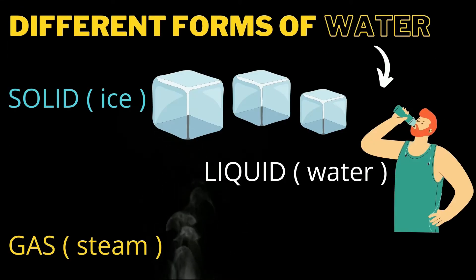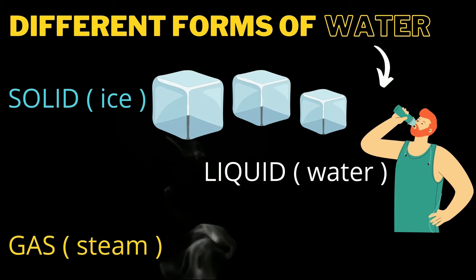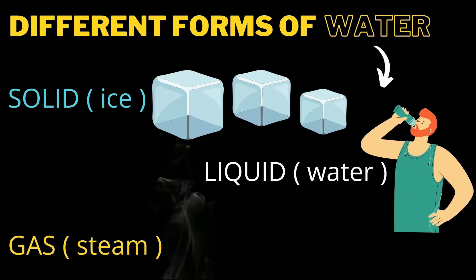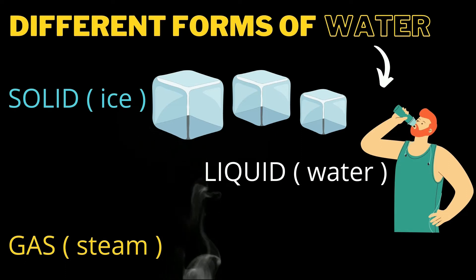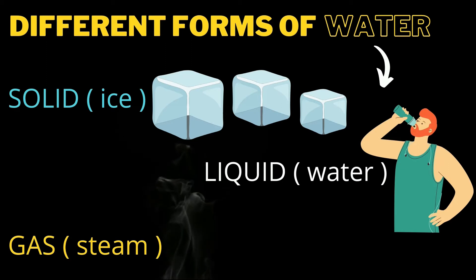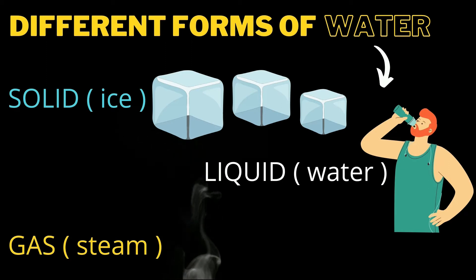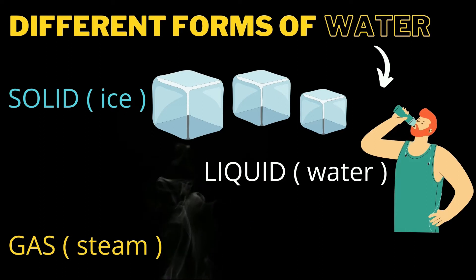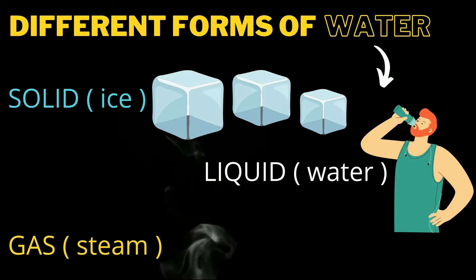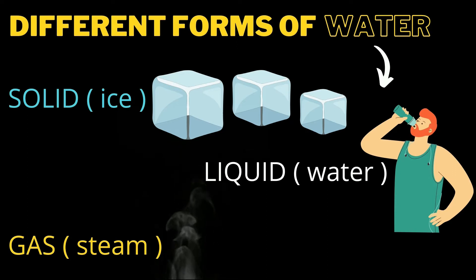What are the different forms of water? Water has different forms. Solid, which is ice. I hope you've seen an ice cube in your fridge, in the freezer. Look at these ice cubes in the picture. That is water in its solid state.